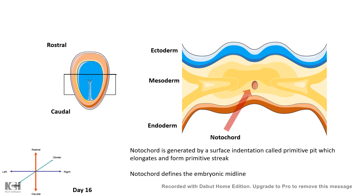The notochord defines the midline of the embryo. The part of the ectoderm that lies just above the notochord is known as neuroectoderm. Why this part of the epithelium is different from its adjacent neighbors — we would talk about that later, but they are definitely different in terms of cellular properties.